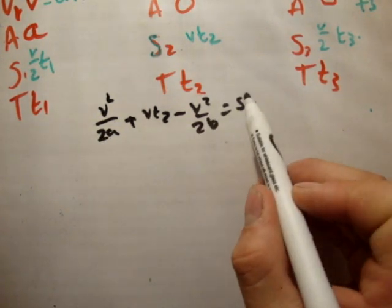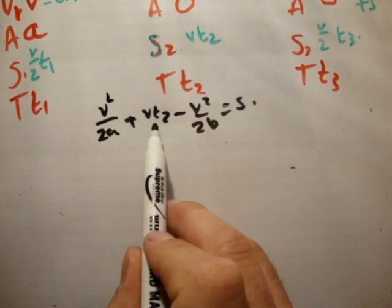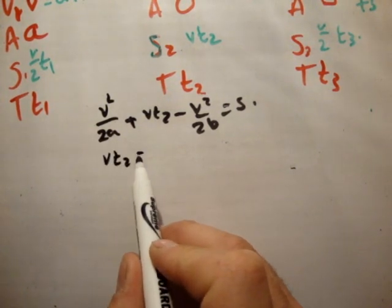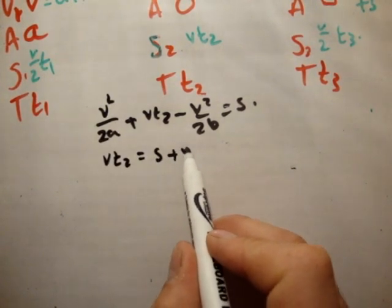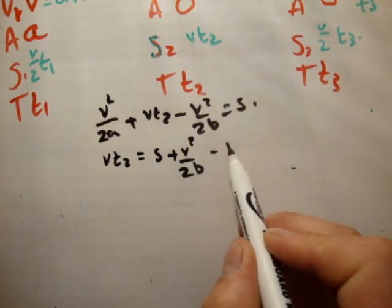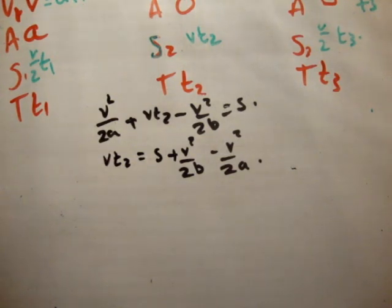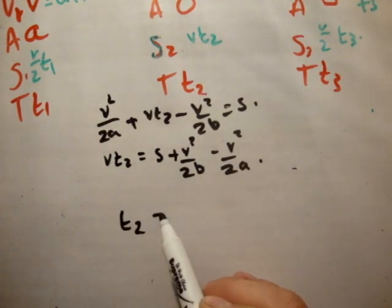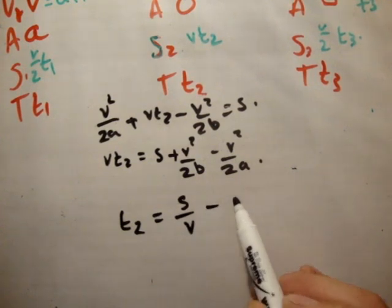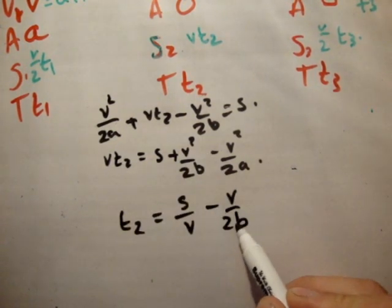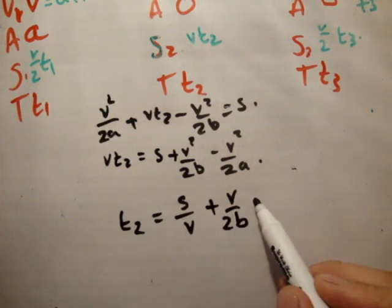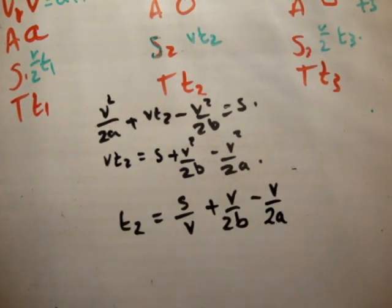So, what I'll do is bring everything over to the right-hand side except for t2. So, v times t2 is equal to s plus v squared over 2b, minus v squared over 2a. Now, if you want, you can have a look at the answer on page 62 and see that we're getting close. So, we're seeing things that are similar. So, finally, we know that t2 is equal to s over v, plus v over 2b, minus v over 2a. Like that.